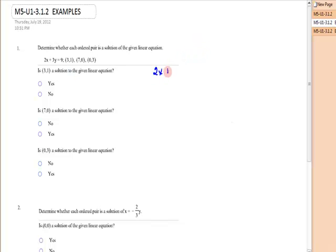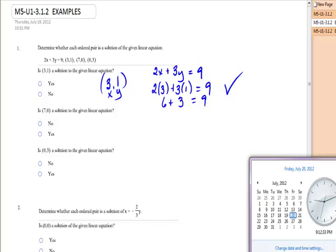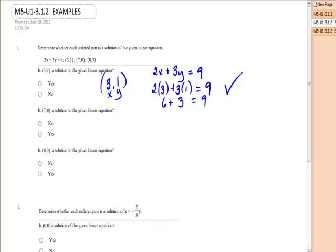For the first one, I have 2x plus 3y equals 9. It says, is (3,1) a solution? I have to remember that x is 3 and y is 1. So the question is, is 2 times 3 plus 3 times 1 equal to 9? Let's simplify on the left-hand side. 2 times 3 is 6. 3 times 1 is 3. Is 6 plus 3 equal to 9? Yes. And you may stop this any time you want when you recognize that it is either true or false. So is this a solution? The answer is yes.